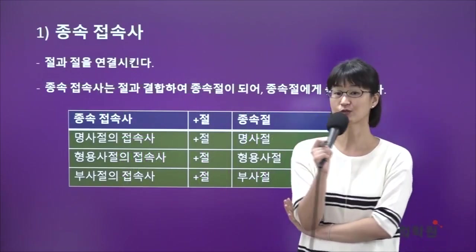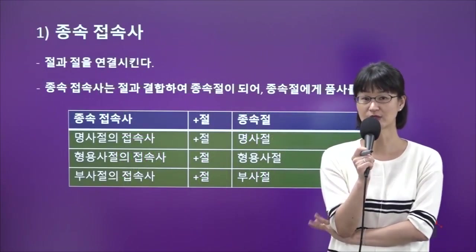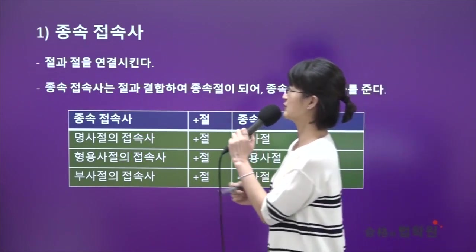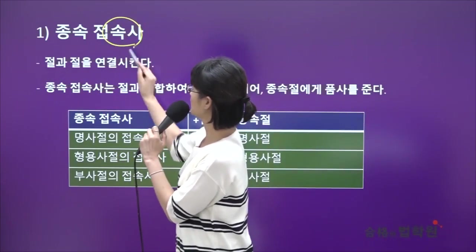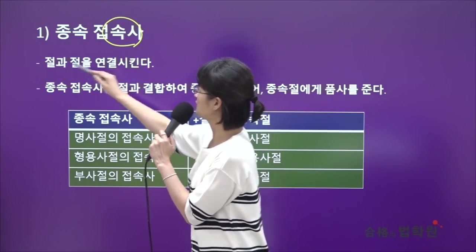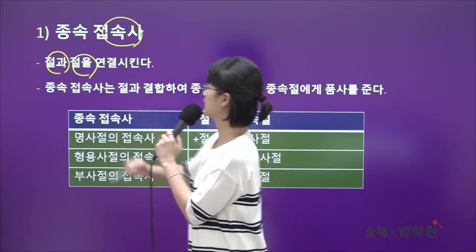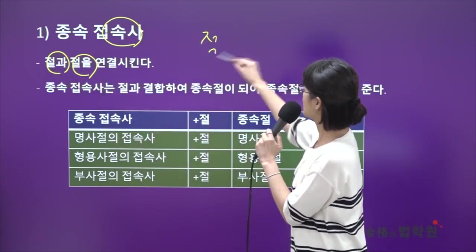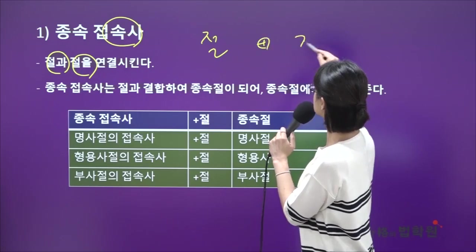접속사는 크게 종속접속사와 등위접속사로 나뉘고, 우선은 종속접속사를 볼게요. 접속사이기 때문에 당연히 한 문장 안에서 절과 절을 연결시켜요.